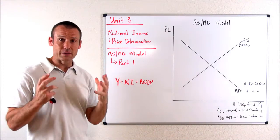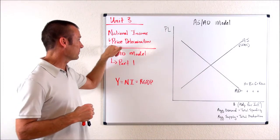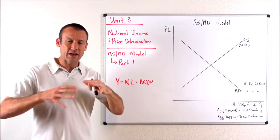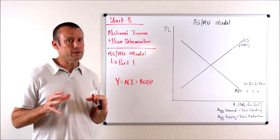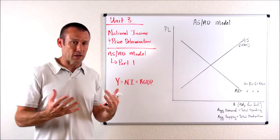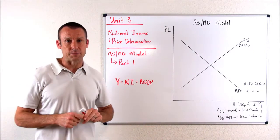Unit three, according to AP, is titled National Income and Price Determination. Generally, I kind of have my approach to teaching this course. However, in these videos, I'm going to start really aligning myself strictly with the AP test.